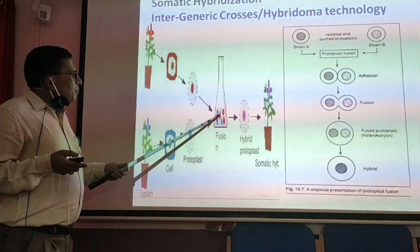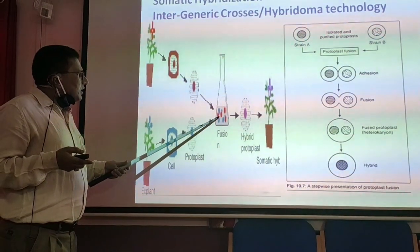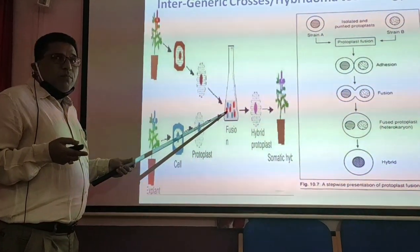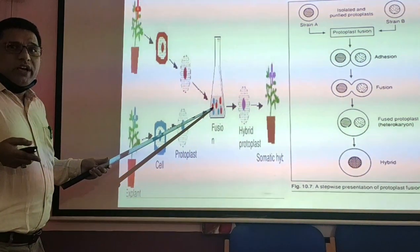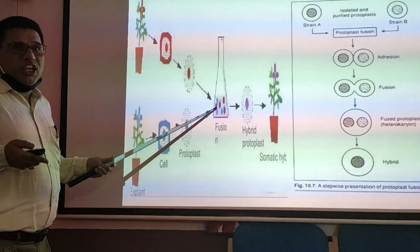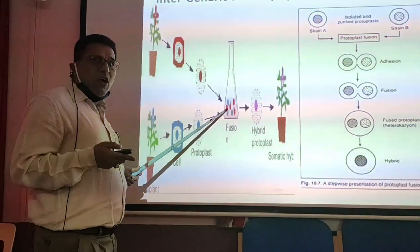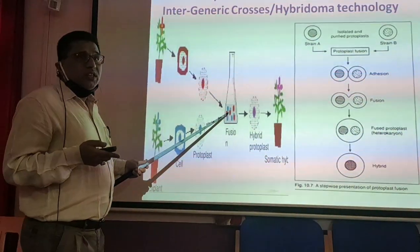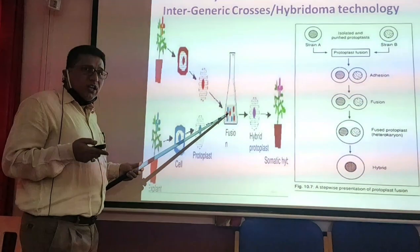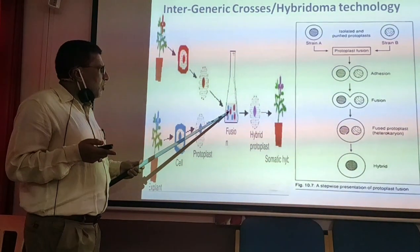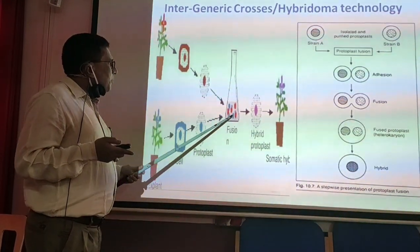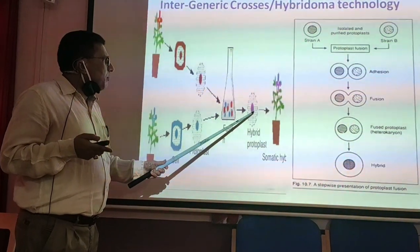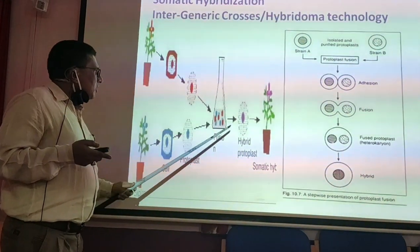After the protoplasts are isolated, the protoplasts are fused to one another by putting a chemical called PEG — polyethylene glycol — so that a hybrid protoplast is obtained which is a combination of potato and tomato.